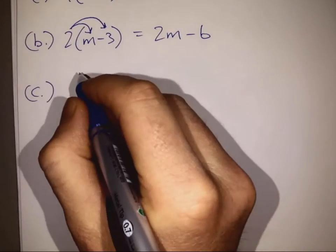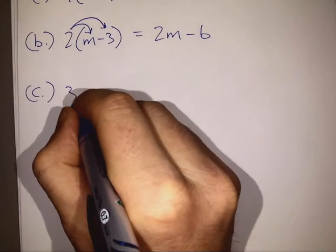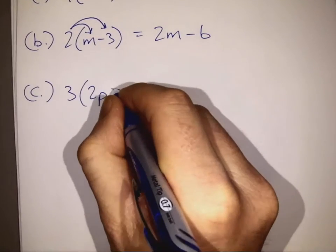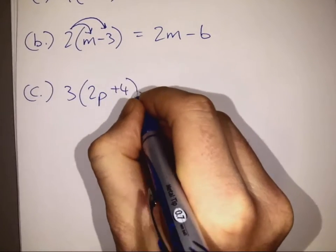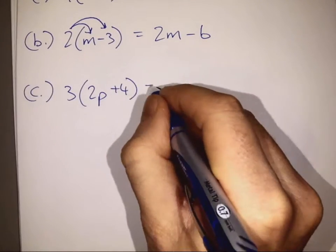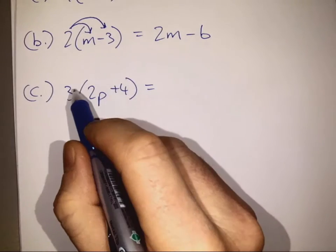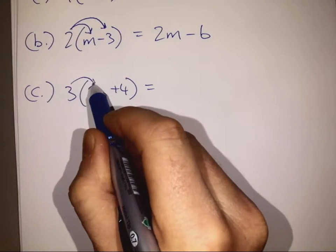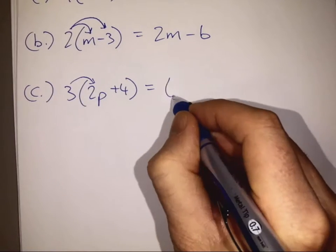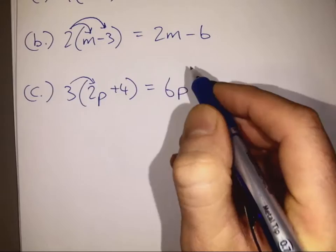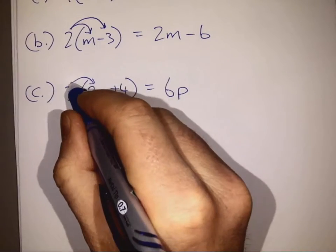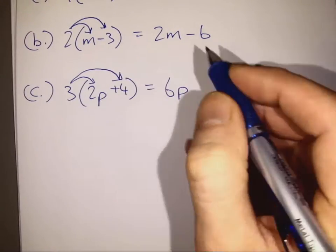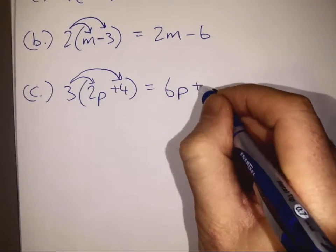Part C: 3 times 2p plus 4. We multiply the 3 by the first item which is 2p — that gives us 6p — and 3 times the second item gives us plus 12.